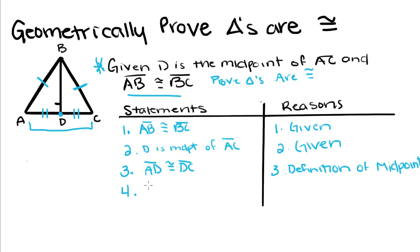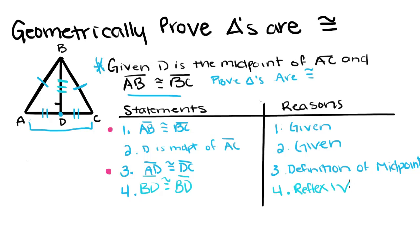So far we have one pair of congruent sides and two pairs of congruent sides. Most likely we're going to be doing a side-side-side proof. If you notice, they share this side right here, BD. We have this theorem that says BD is congruent to BD because it's the same line, so it has to have the same measure as itself, and our reason for this is called the reflexive property. That's like saying five is equal to five — the length of BD has to equal the length of BD. So now we have three pairs of congruent sides.